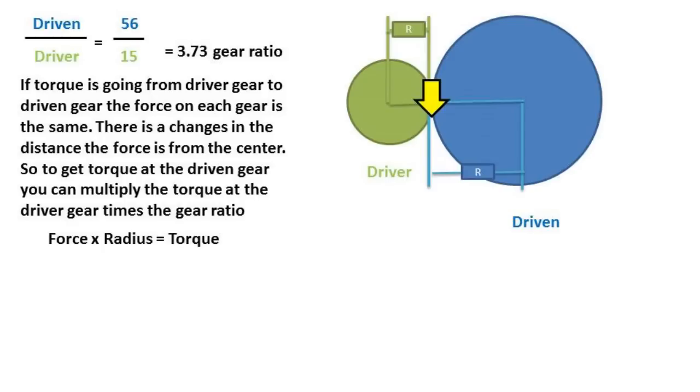To prove this, we can see that the formula for torque is force times radius. If we take the force times the radius of the driven gear and divide it by the force times the radius of the driver gear, we get the gear ratio. Notice in this equation that the force is the same, so we are really just taking one gear's radius over the other gear's radius. Taking the driven gear's radius over the driver's gear radius is another way to find the gear ratio.